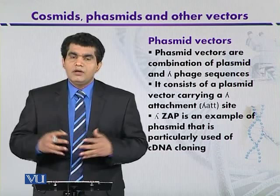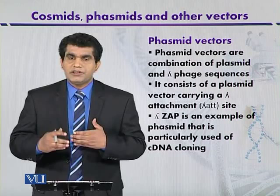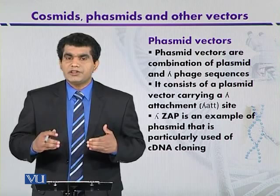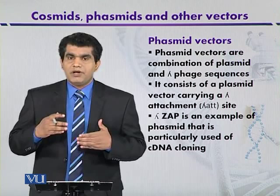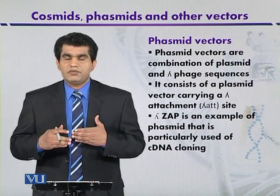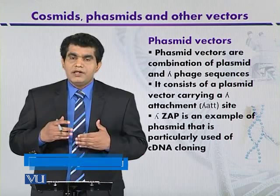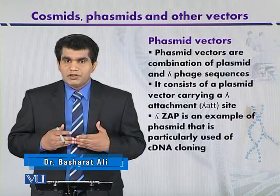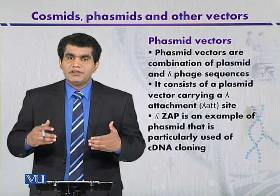Phasmid vectors can be synthesized by the insertion of the plasmid DNA into the lambda genome. This insertion of the plasmid into the lambda genome occurs by the same mechanism by which the lambda genome inserts itself into the host bacterial chromosome — a process called site-specific recombination. In the case of lysogenic bacteriophages, the lambda genome by site-specific recombination can insert its DNA into the host bacterial chromosome.